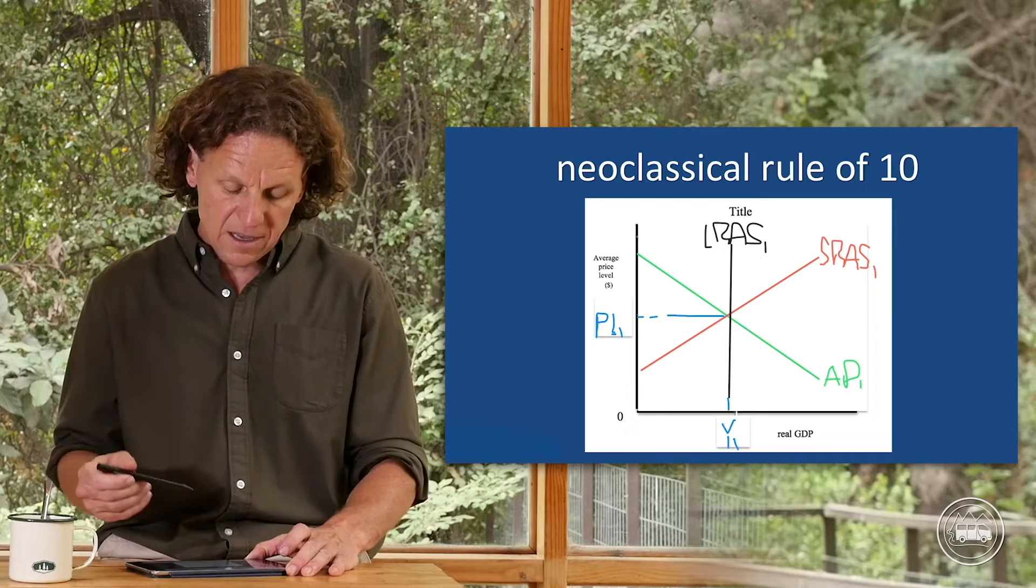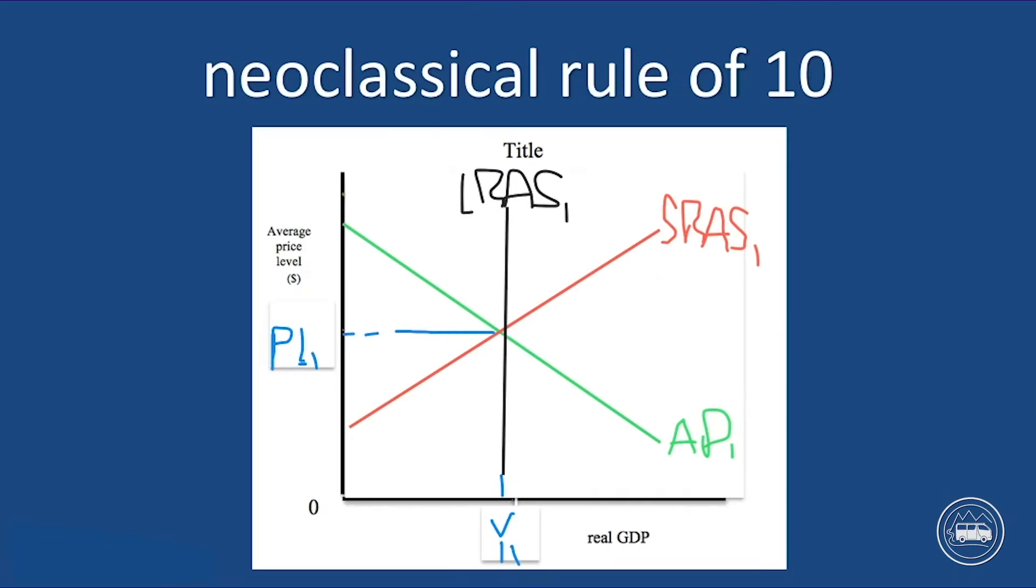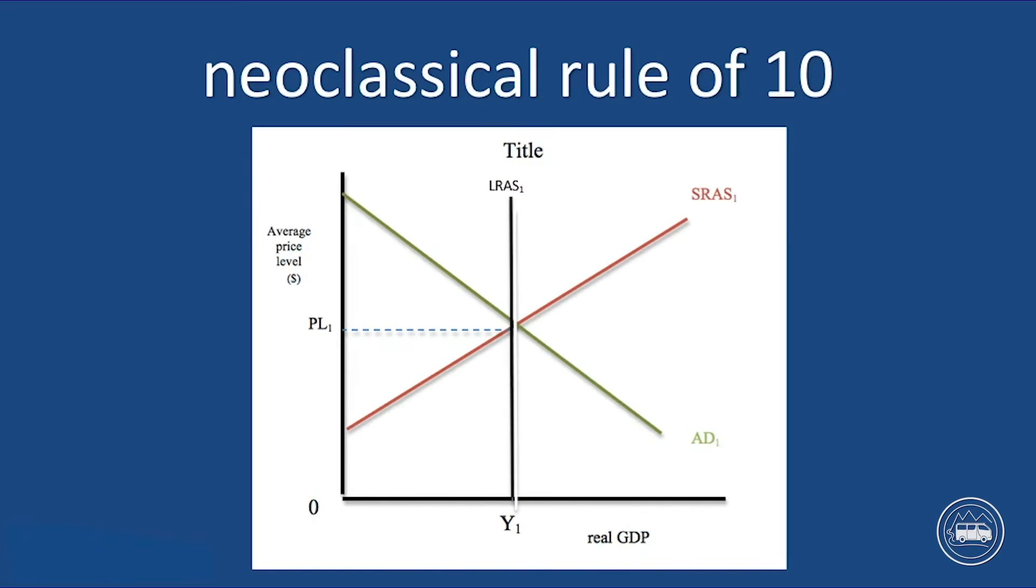It's the neoclassical rule of 10. Why is it the rule of 10? Because we are going to realize that there are 10 elements here. Average price level is one. Currency is two. PL1 is three. Zero is four, the origin. Y1 is five. Real GDP is six. AD1 is seven. SRAS is eight. LRAS1 is nine. And the title is 10. And there you have it, the neoclassical rule of 10. And if I clean that up a little bit, it looks like that. So that right there is the perfectly drawn neoclassical aggregate demand aggregate supply diagram.